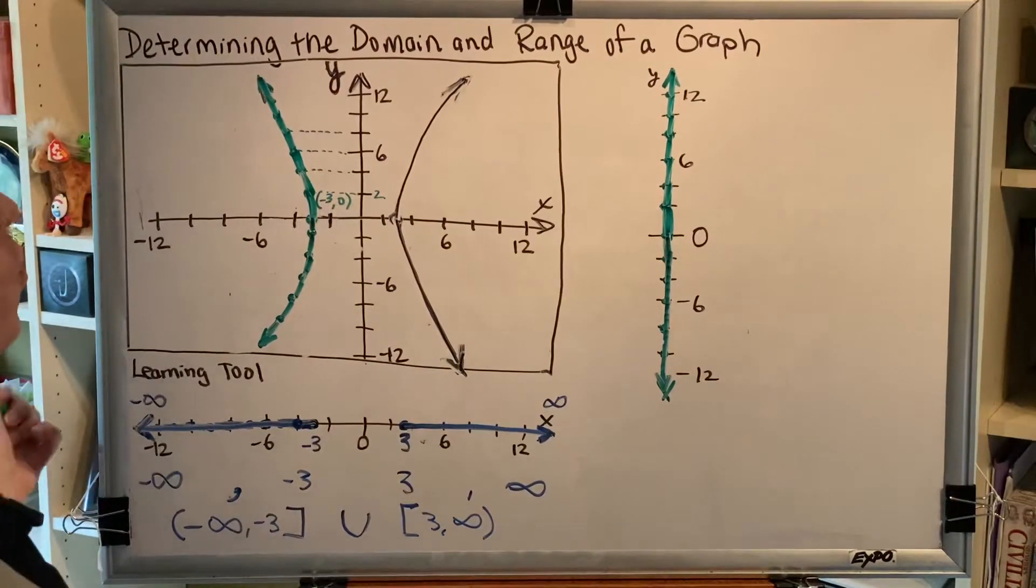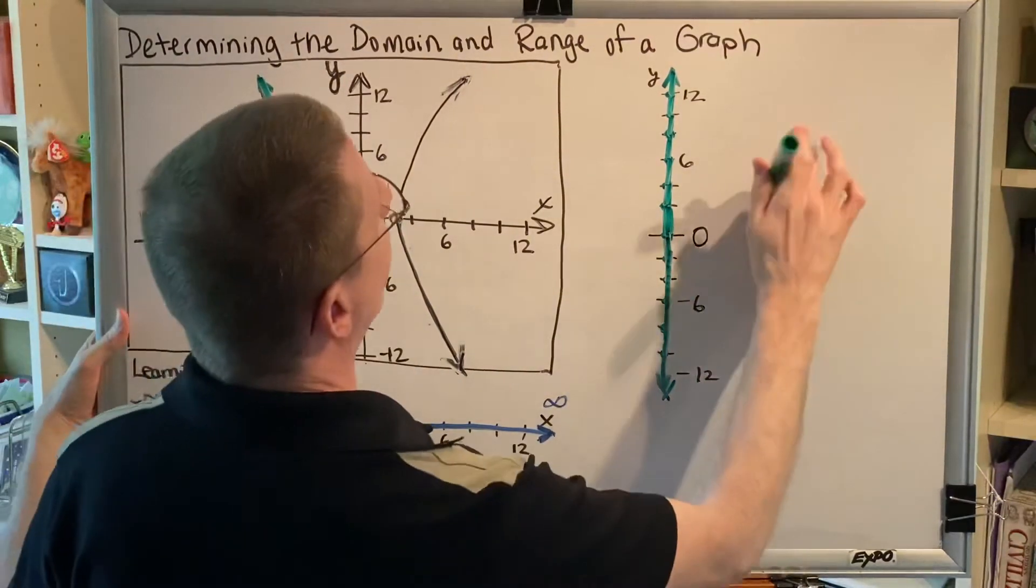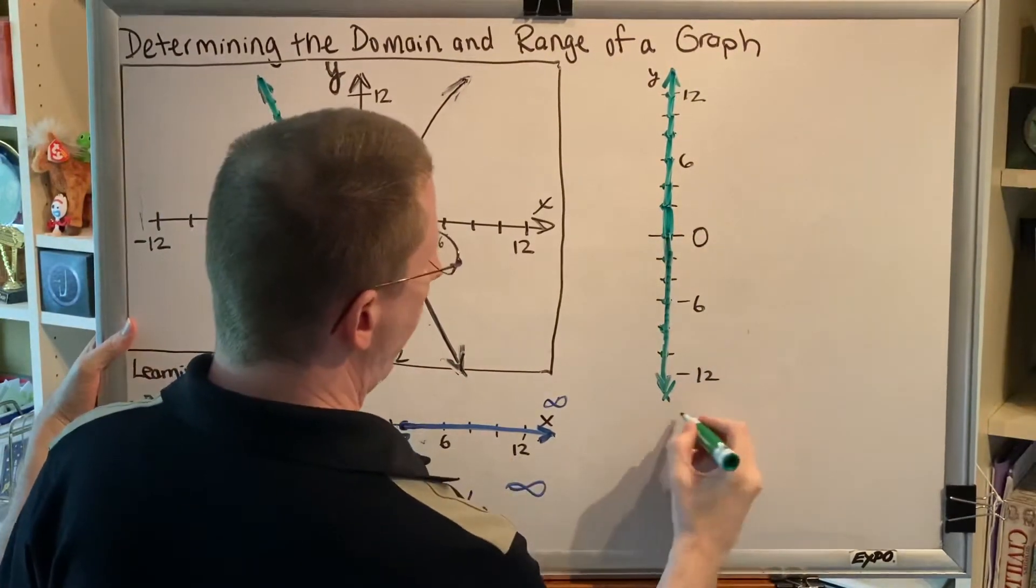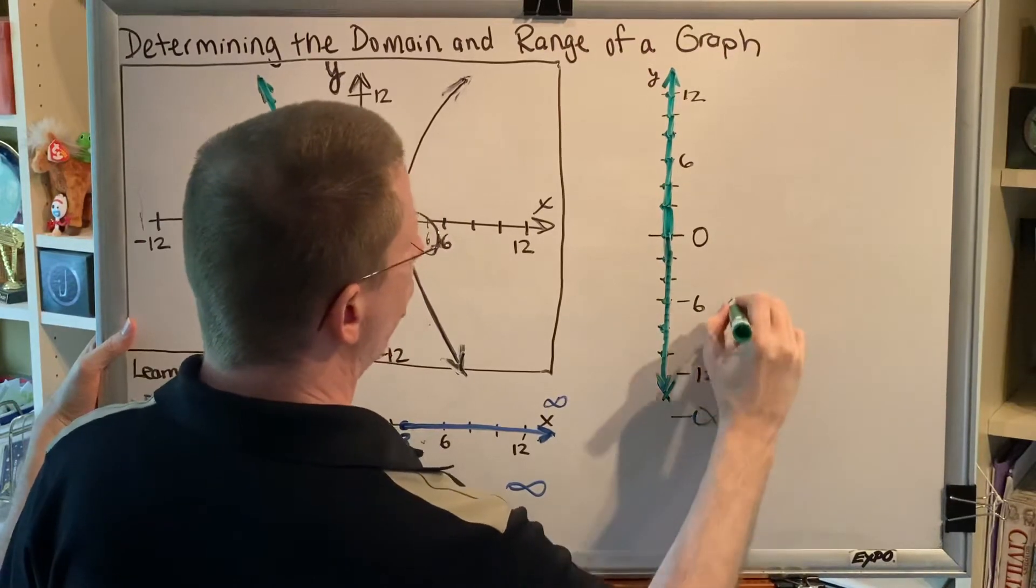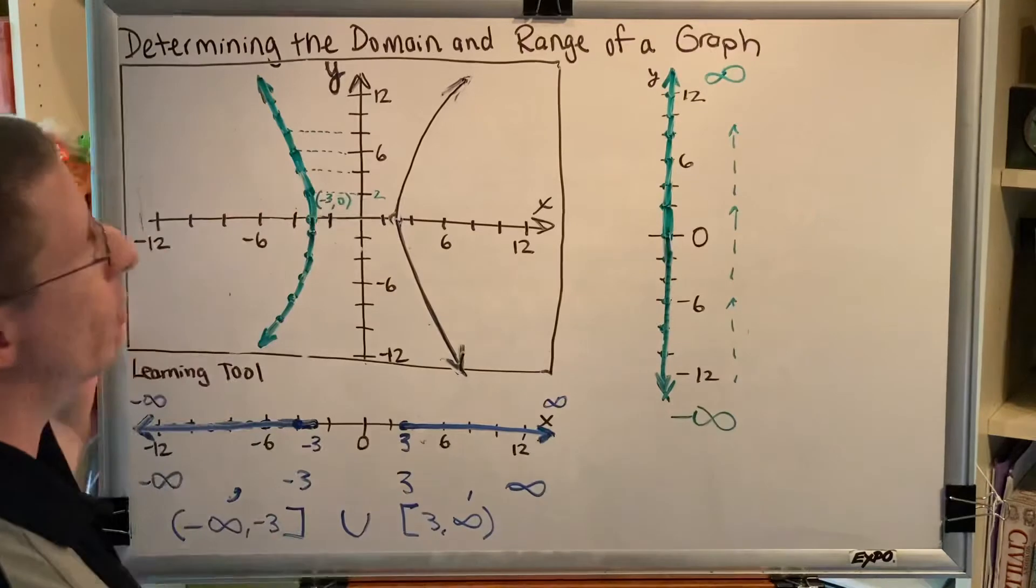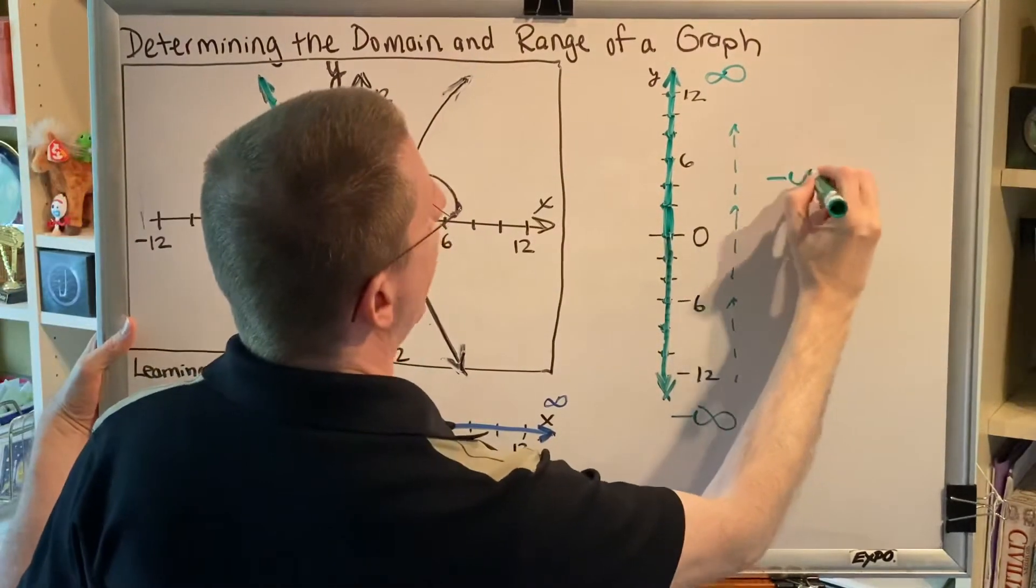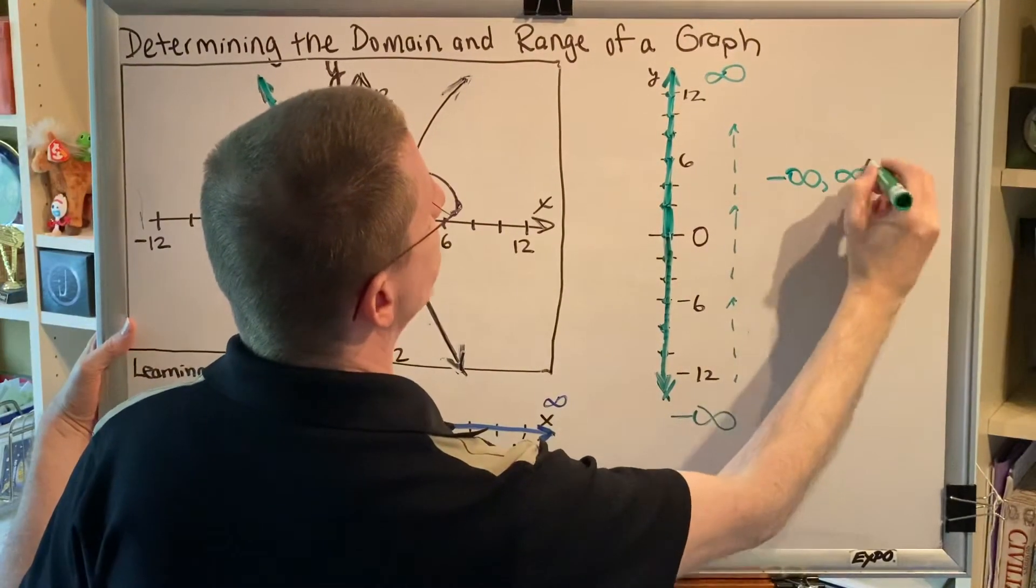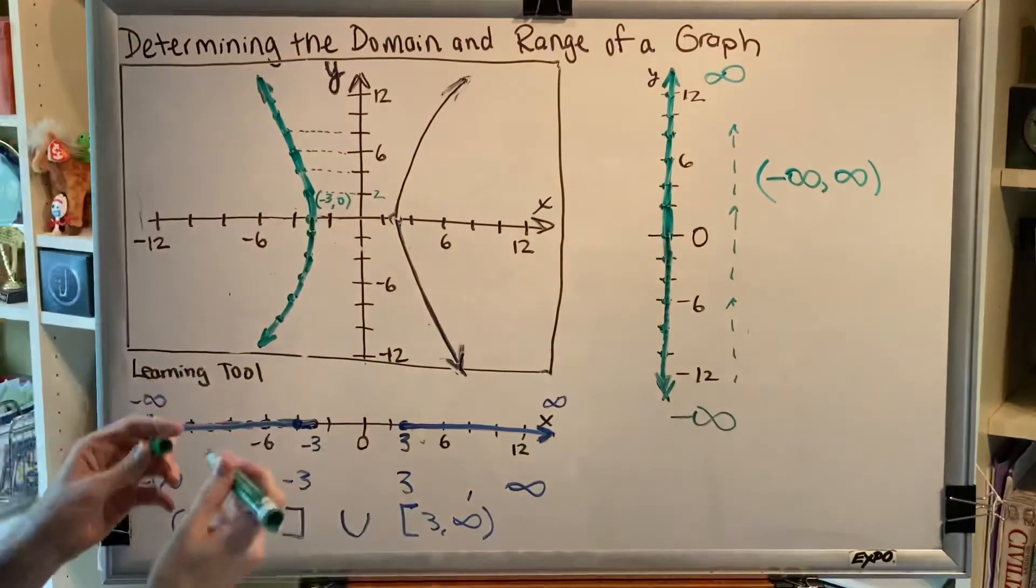Every number in the world is represented in the collection of y-coordinates, all the way from negative infinity on up to positive infinity. So we would write our range as the interval negative infinity comma positive infinity.